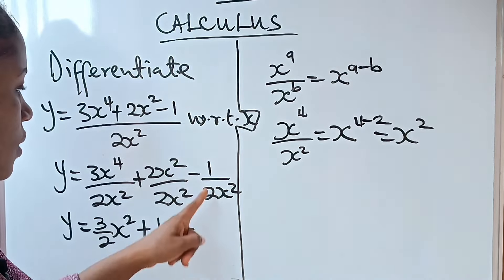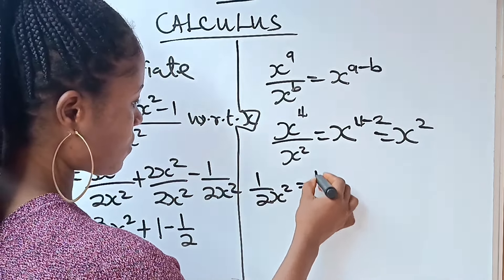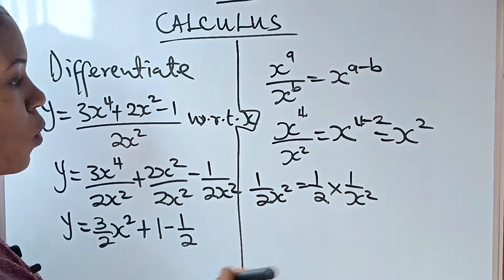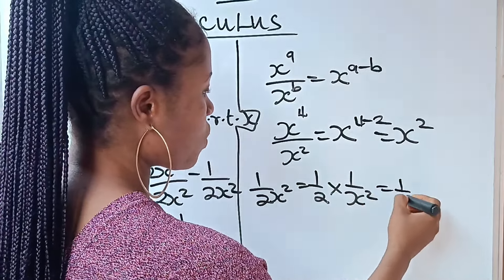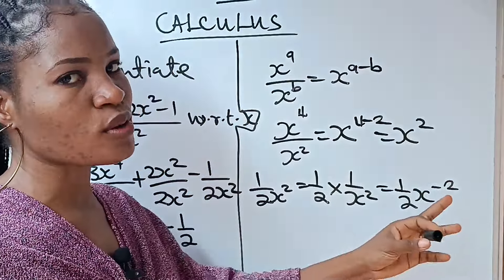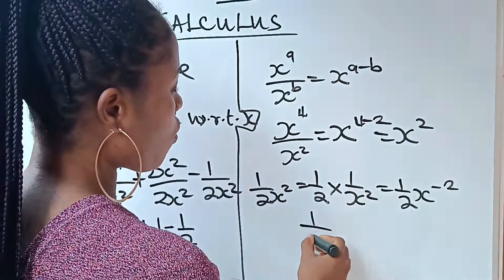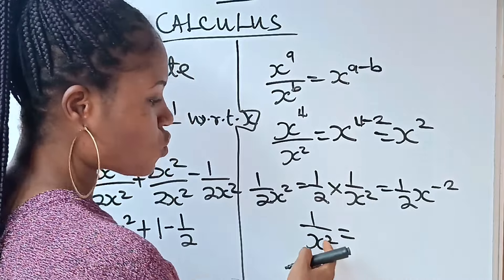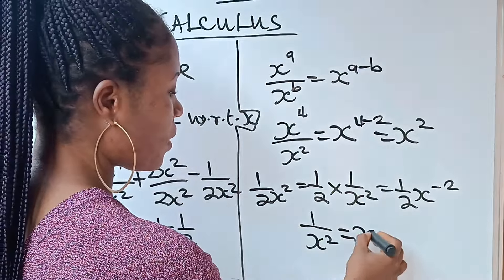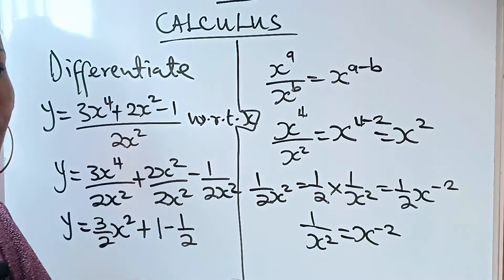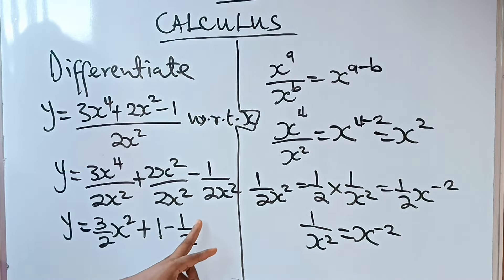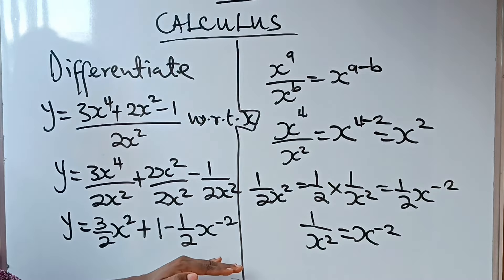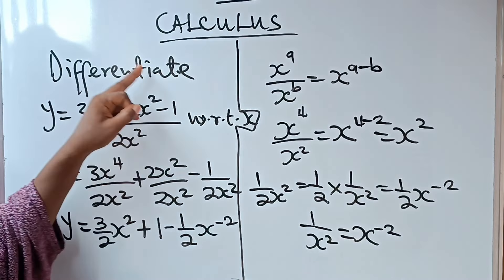Now there is something I want you to know. We have 1 over 2x squared, which is the same as 1 over 2 times 1 over x squared. And 1 over x squared can be written as x to the power of minus 2, because when you have 1 over something, you remove the 1 over and replace it with a negative power. So 1 over x squared becomes x to the power of minus 2. This makes it now easier to differentiate.